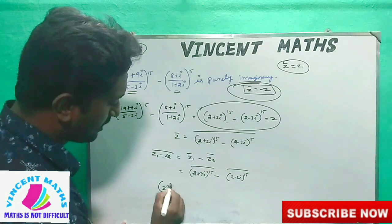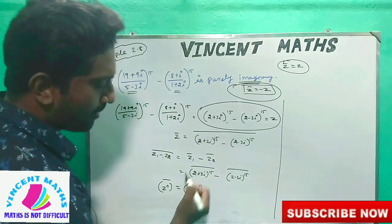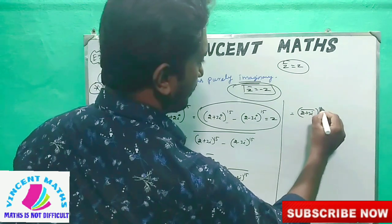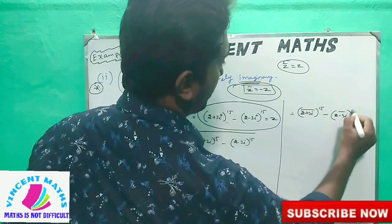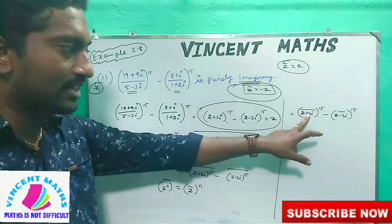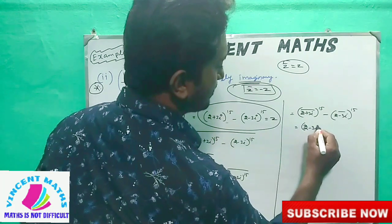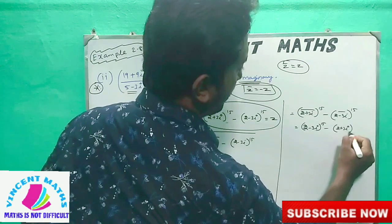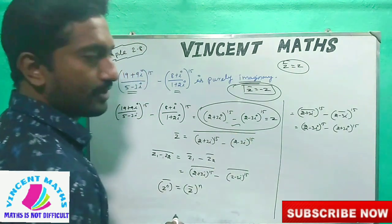What is the whole bar property? Z-bar, whole power n. If you look at this property: 2 plus 3i, bar, power 15 — that means 2 minus 3i, bar, power 15. Now bar cancels — the sign changes — giving 2 minus 3i, power 15.